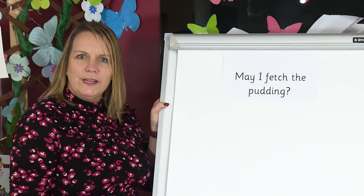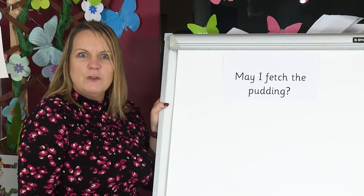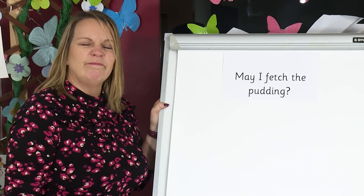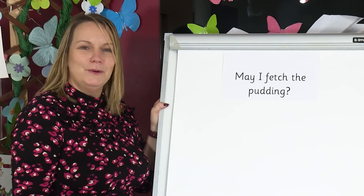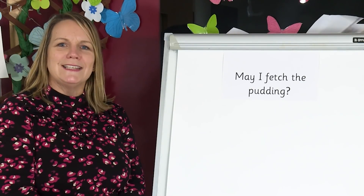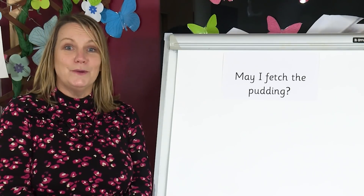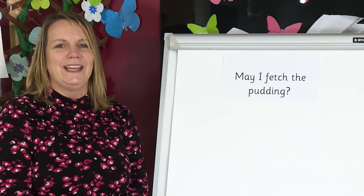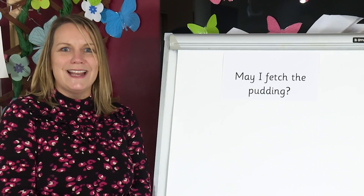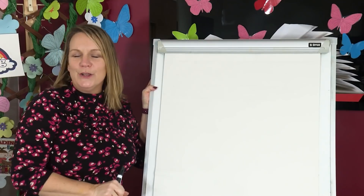Oh, I wonder if the pudding was apple crumble. Or maybe it was chocolate pudding. Which would you prefer? I think I'd rather it was apple crumble. Wow children, super reading today. So now time for some super spelling, because if you can read a word then you can have a go at spelling it. You will need your paper and something to write with now. Let's spell two words with our new grapheme.